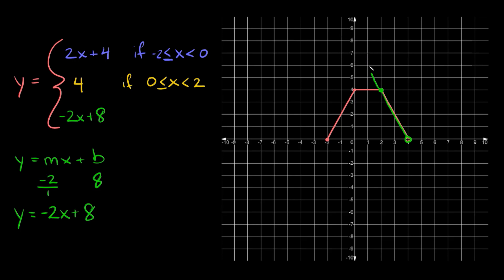Now again, this line doesn't go that far — we have limits on it. This line goes from x equals two all the way to right here where x equals positive four. So we're going to say this line is valid if x is between two and four.